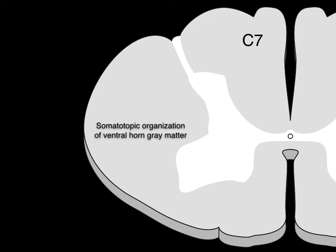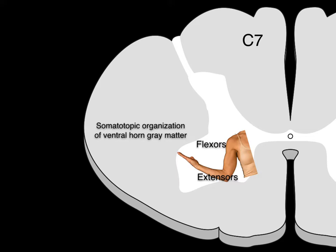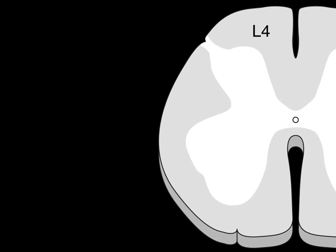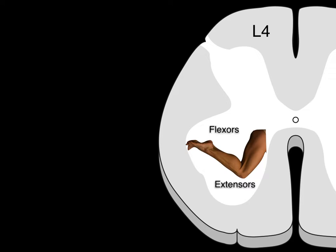There is a somatotopic organization of ventral horn gray matter. In the cervical region, extensors are close to the front of the ventral horn, flexors are close to the back, axial musculature is medial, and distal musculature is lateral. At the lumbar level, the same organization applies — flexors and extensors are posterior and anterior respectively, and axial and distal muscles are medial and lateral respectively.